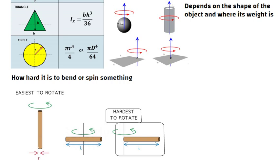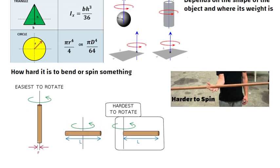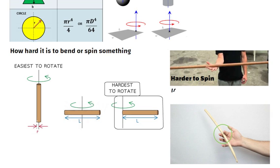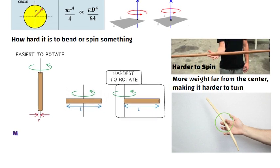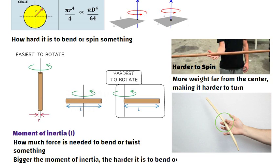Think of it like this: imagine you are trying to spin a long heavy stick. It is harder to spin than a small light stick. The heavy stick has more weight far from the center, making it harder to turn. Moment of inertia helps engineers know how much force is needed to bend or twist something. The bigger the moment of inertia, the harder it is to bend or twist.